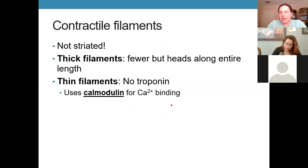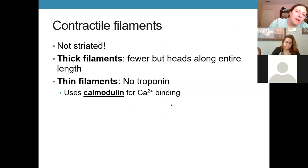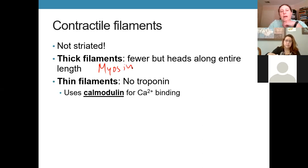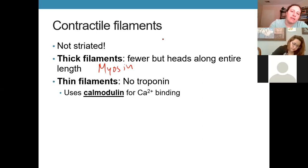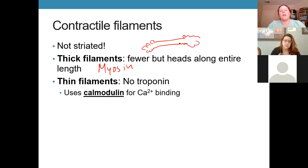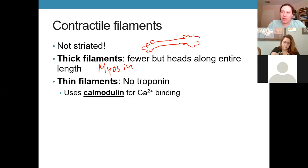In spite of not being striated, smooth muscle is still perfectly capable of contracting and still has contractile filaments. There are still thick filaments composed of myosin, though fewer of them. However, instead of myosin heads being just on either end as in skeletal muscle thick filaments, here they're along the entire length. That has important implications for how much shortening can occur — we get more shortening if there are heads along the entire length of the thick filament, allowing more overlap.